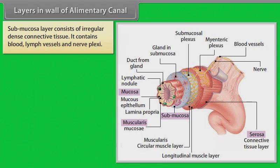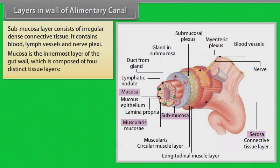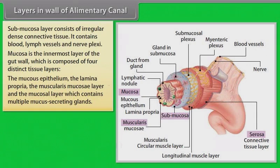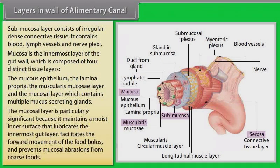The submucosa layer consists of irregular dense connective tissue and contains blood vessels, lymph vessels, and nerve plexuses. The mucosa is the innermost layer of the gut wall, composed of four distinct tissue layers: the mucous epithelium, the lamina propria, the muscularis mucosa, and the mucosal layer containing multiple mucous-secreting glands. The mucosal layer maintains a moist inner surface that lubricates the gut, facilitates forward movement of the food bolus, and prevents mucosal abrasions from coarse foods.